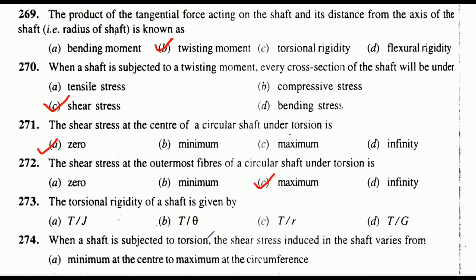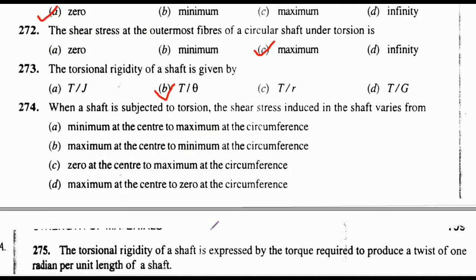The torsional rigidity of a shaft is given by — the correct answer is option B: T/θ. When a shaft is subjected to torsion, the shear stress induced in the shaft varies — the correct answer is option C: zero at the center to the maximum at the circumference.